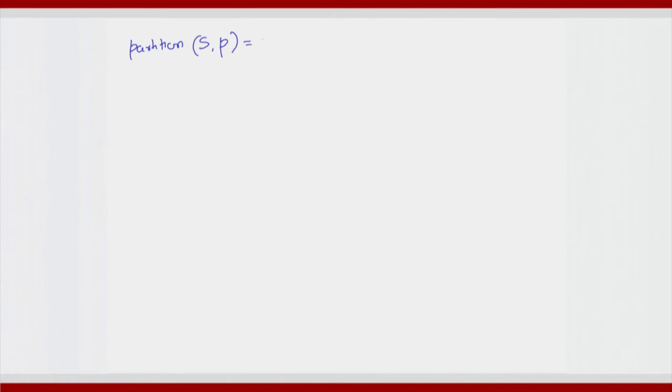Let us discuss the case of partition(s, p), where p is the position with respect to which you want to partition, and you want to give as output the two subsequences s1 and s2. We will assume that s begins at position l and ends at position p.